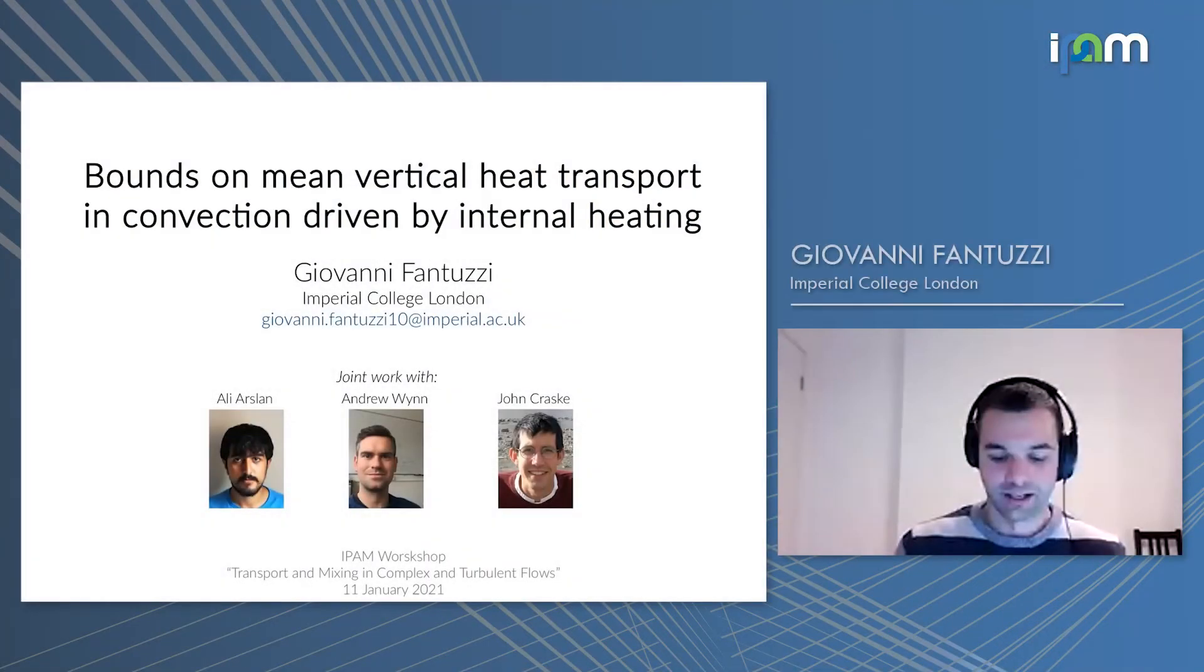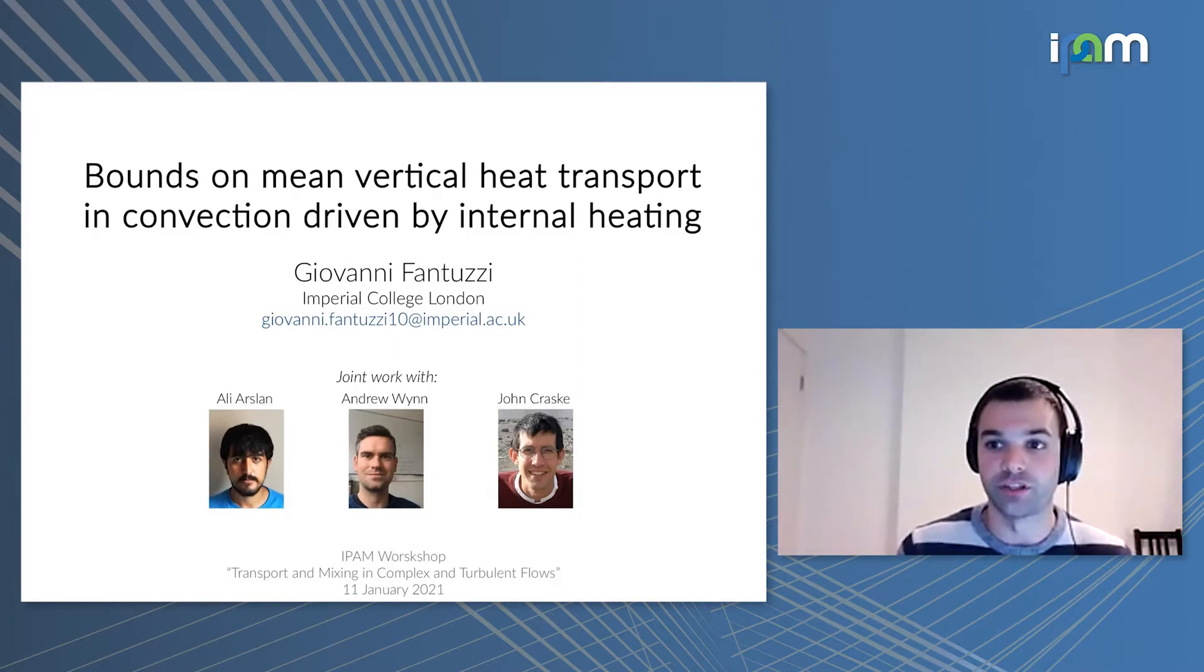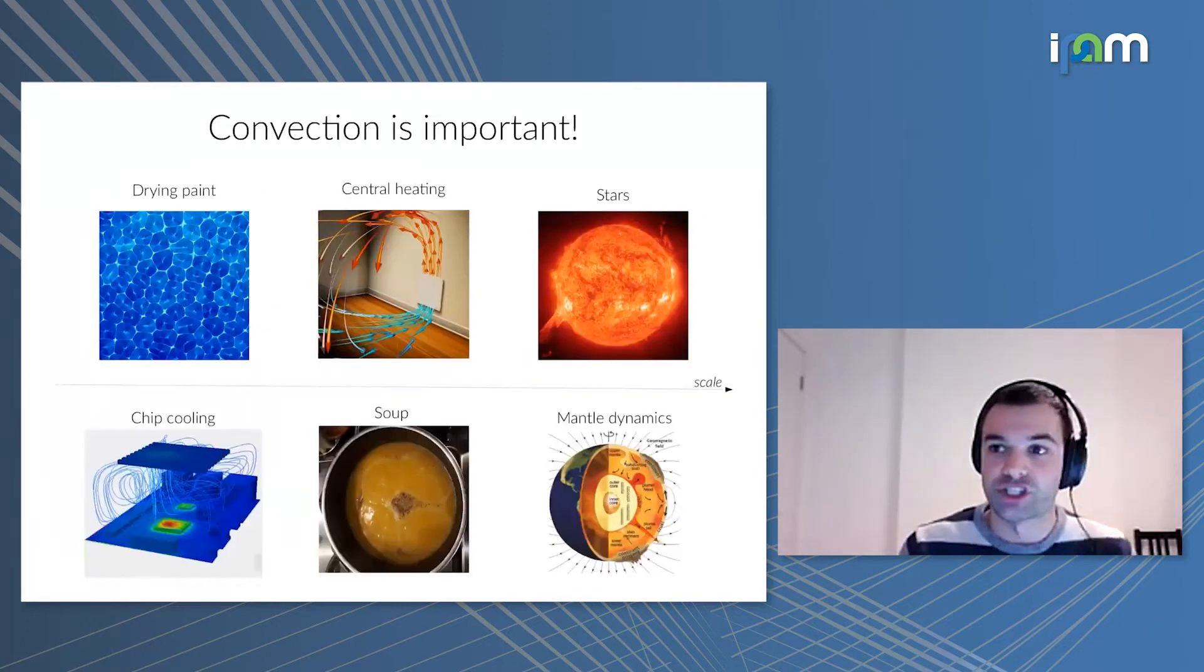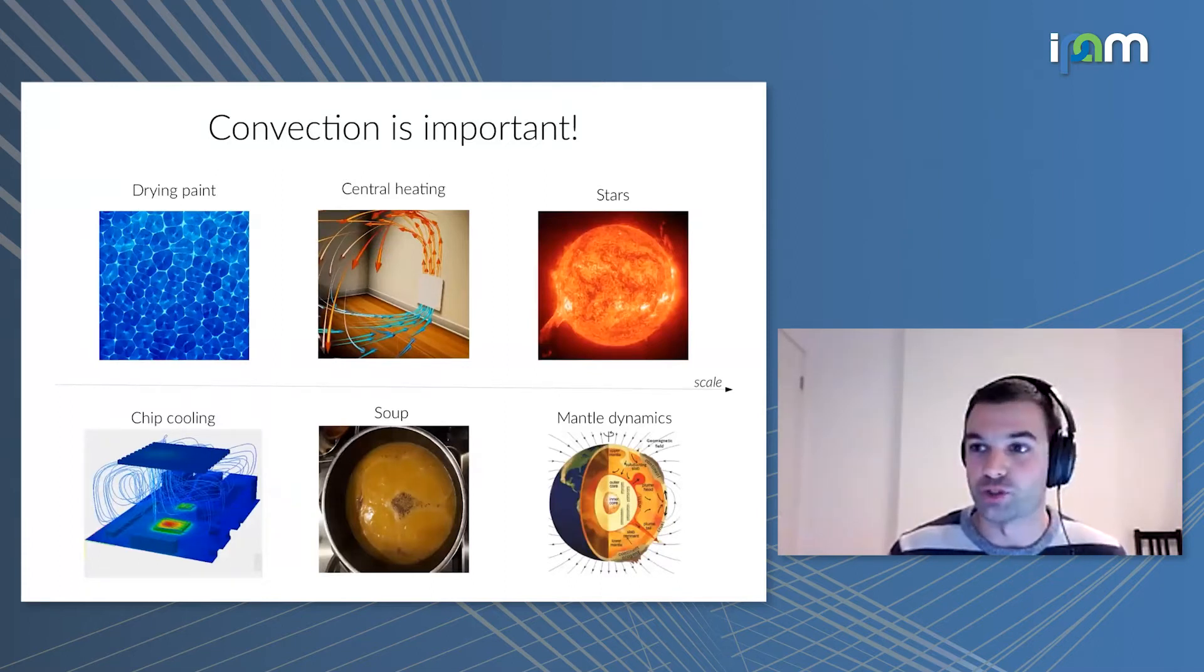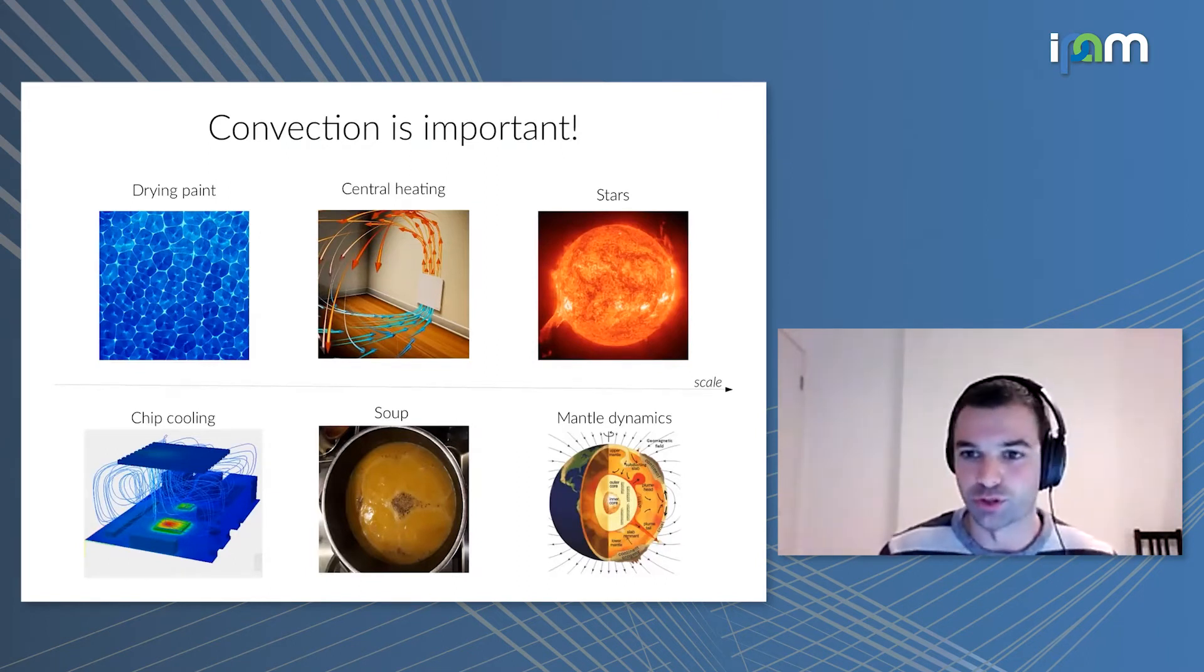Thanks Charlie for the introduction and thanks to the organizers for inviting me. As mentioned, this talk is related to what Basil was discussing, but focuses on convection driven by internal heating. I should mention I've done this work in collaboration with Ali Aslan, a PhD student at Imperial with Andy Wien, and John Kras. Convection is important because it's how nature moves stuff around on any scale where diffusion isn't dominant, from drying paint and electronic cooling to heating rooms and cooking soup, all the way to geophysical and astrophysical scales.